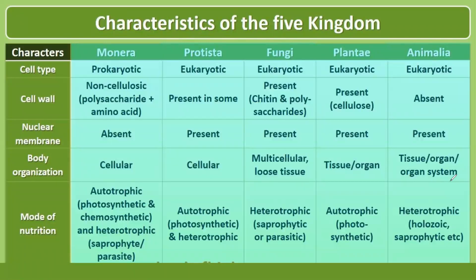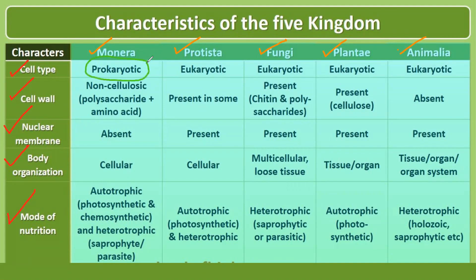The basic characteristics used to differentiate five kingdoms are cell wall, type of cell, nuclear membrane (present or absent), type of body organization, and mode of nutrition. Regarding cell type, Monera have prokaryotic cells — a primitive type — while Protista, Fungi, Plantae and Animalia all show eukaryotic cells with a well-developed nuclear system.